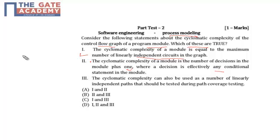Here options 1, 2, and 3, all these three statements are properties of cyclomatic complexity of control flow graph. That's why option 1 is true, option 2 is also true, and this one is also true.